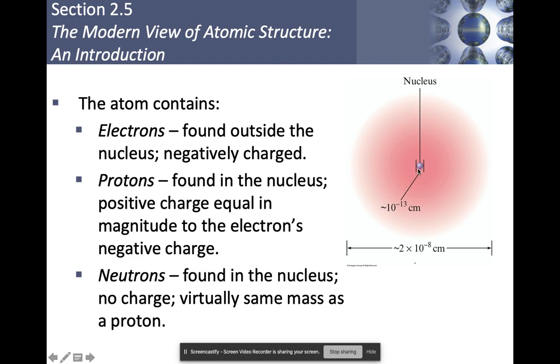Electrons are found outside of the nucleus, the nucleus being the center here, and they are negatively charged. Protons are found in the nucleus, they are positively charged, and they are always going to be equal to the magnitude of the electron's negative charge. Neutrons are also found in the center of the nucleus. They have no charge and virtually have the same mass as a proton.